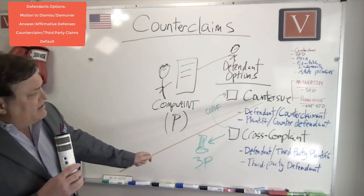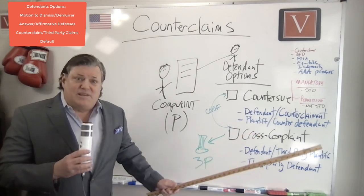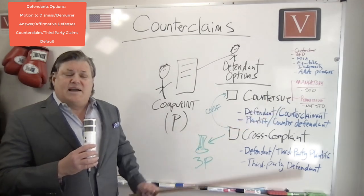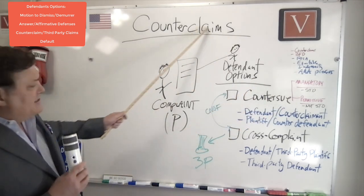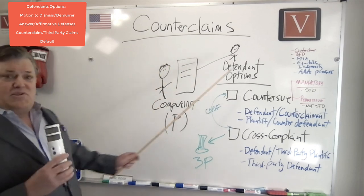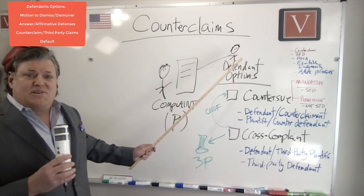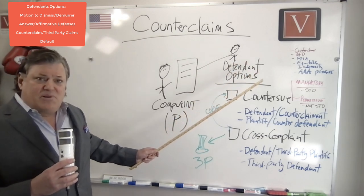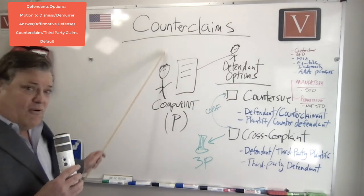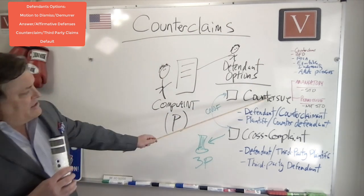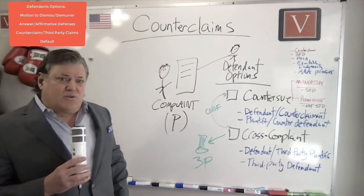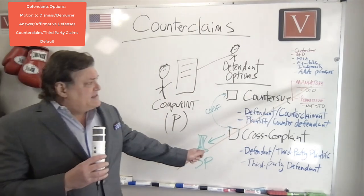They can also at the same time do other things. For example, they can file a countersuit — what's a countersuit? That's going back against the original plaintiff, saying: well, you're suing me for breach of contract, but I wasn't the breaching party. It was a minor breach on my end and you should have continued your performance — I am going to sue you for breach of contract. We would call this a countersuit or counterclaim.